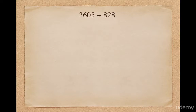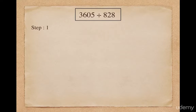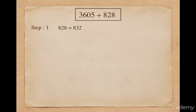Suppose I want to divide 3605 by 828. 828 is closer and smaller than a power of 10, so we can definitely apply Nikhilam formula here. But for simplicity, use the Vinaculum concept and convert the bigger digit 8 into a smaller digit. I take the 10's complement of the last digit 8, which will be converted to 2-bar, and I increment the previous digit 2 by 1. So 828 will be converted to 83 2-bar.